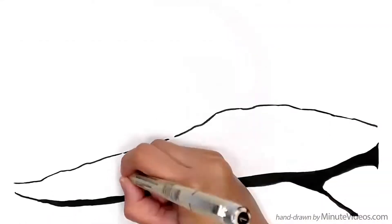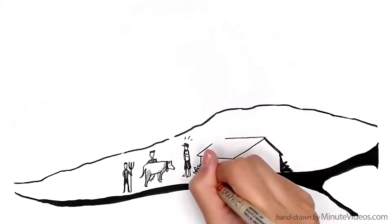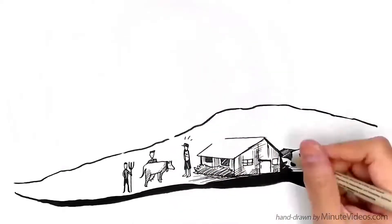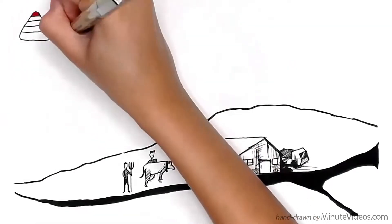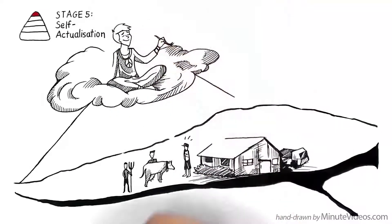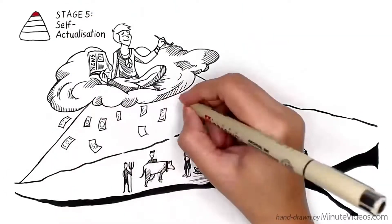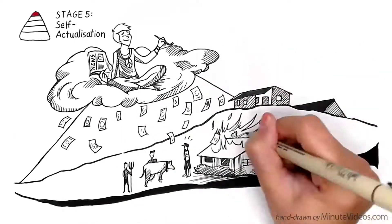Only if we breathe and drink and eat and sleep enough and we feel safe and part of a group and still special, only then can we reach level 5, self-actualization. Now we can relax, be creative, accept facts for what they are, give back or do whatever we want. No more pressure, unless of course there is trouble below.